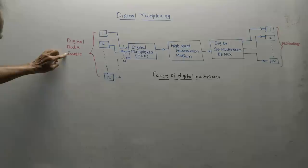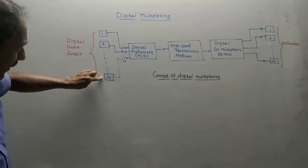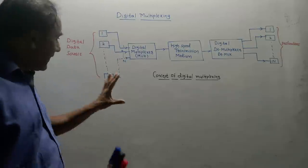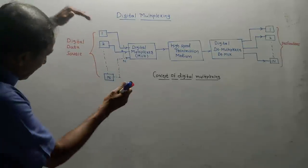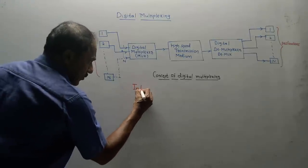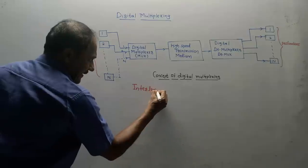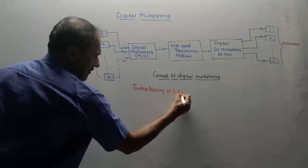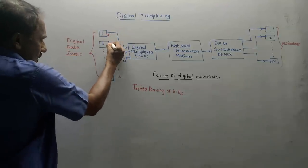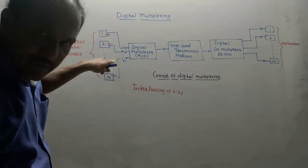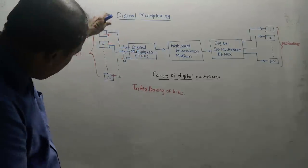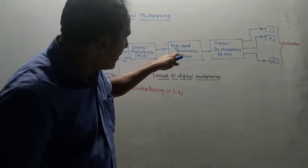There are a lot of sources — these are digital data sources from one to N. The first block is the digital multiplexer, also called MUX. One important concept to remember is interleaving of bits. In simplified language, from source one we take the first bit, from source two the first bit, from source three the first bit, likewise up to source N — and this is the function of digital multiplexing MUX, to interleave the bits.